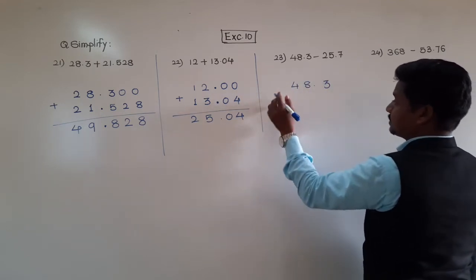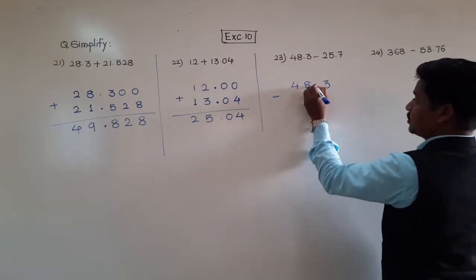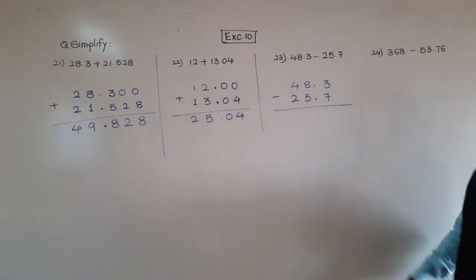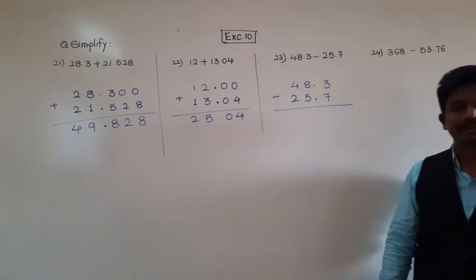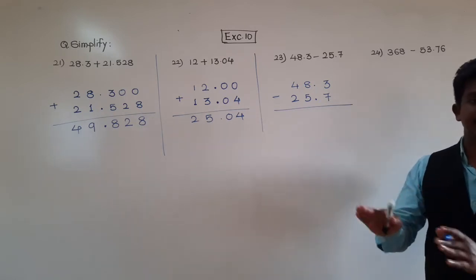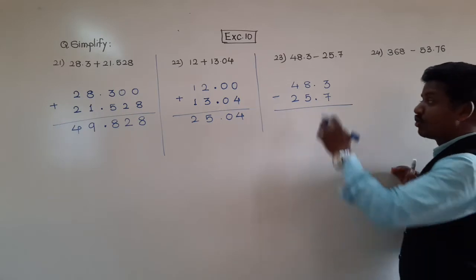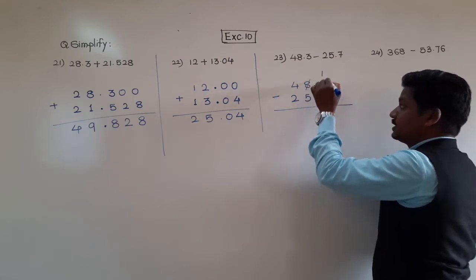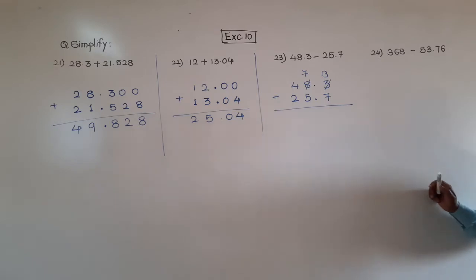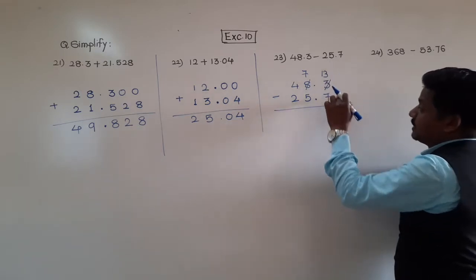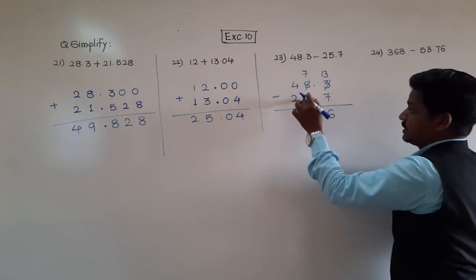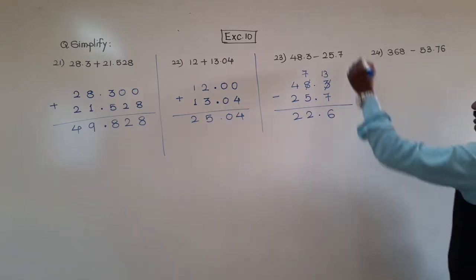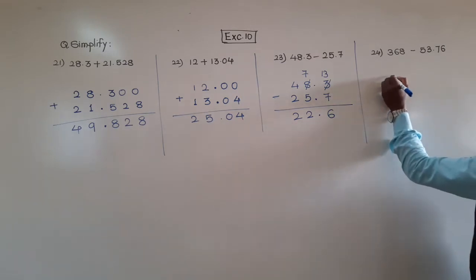Next: 48.3 minus 5.2. Subtraction is here. Now let's subtract. 3 minus 7 — here we use the same rules of subtraction. When 3 minus 7 is not possible, we take a borrow from the whole number part. We take 1 borrow from the 8, so 3 becomes 13. Write 8 minus 1, which remains 7. Now 13 minus 7 is 6. Put the decimal point. 7 minus 5 is 2. And 4 minus 2 is 2. The answer is 22.6.